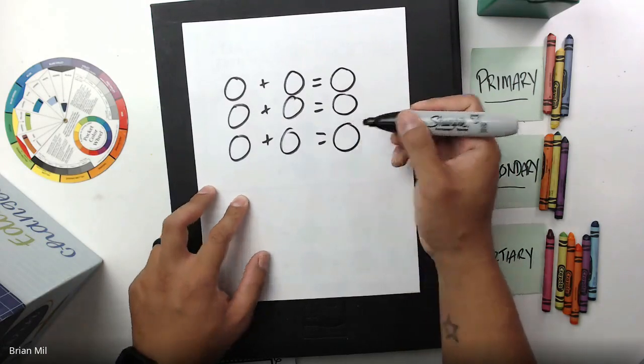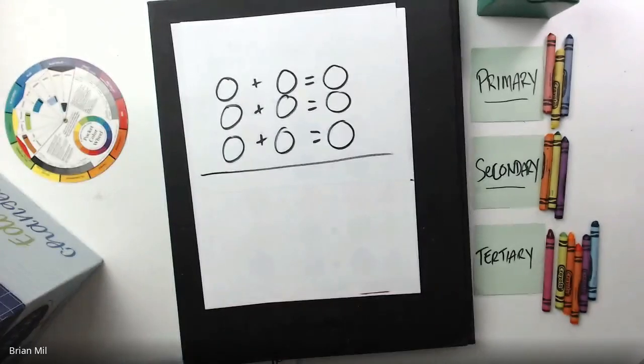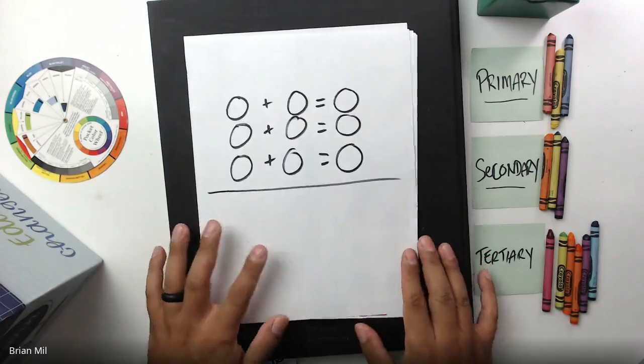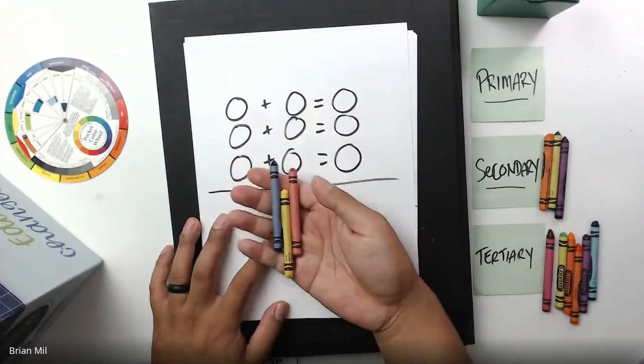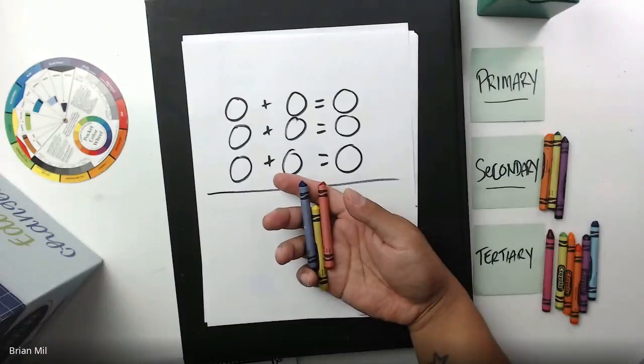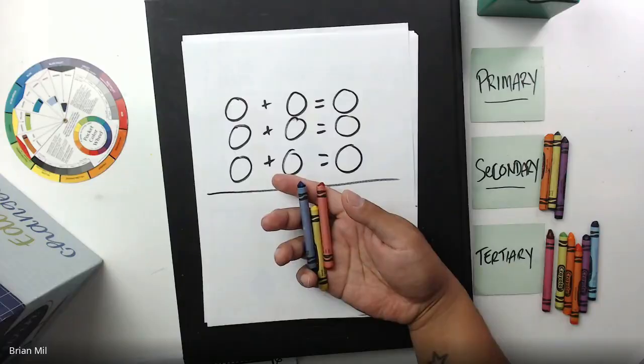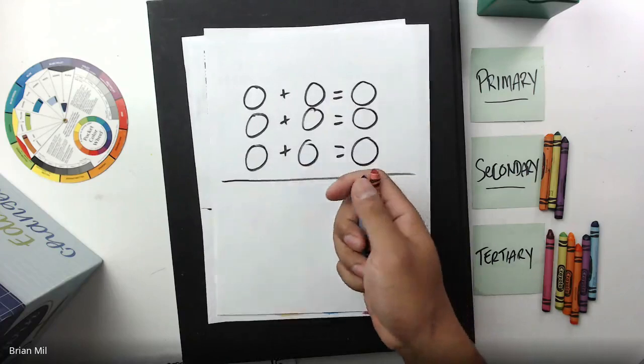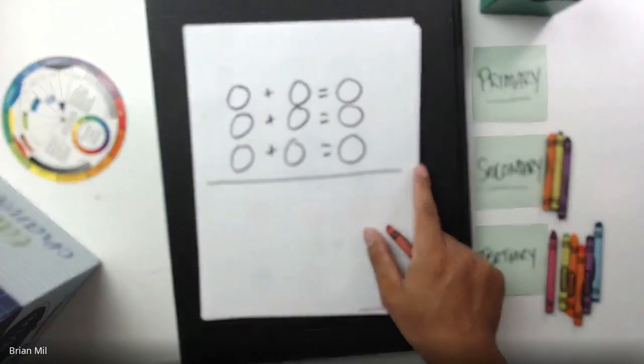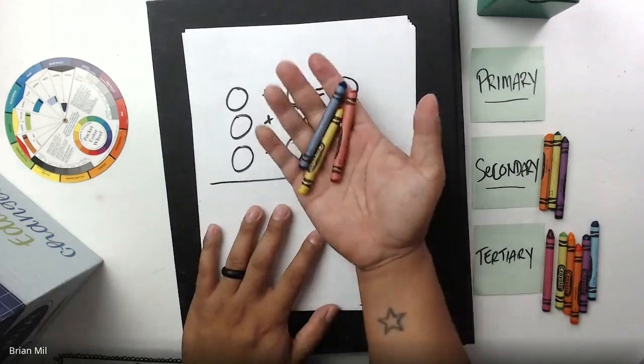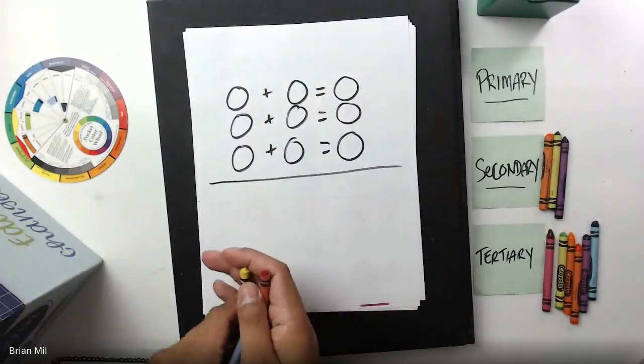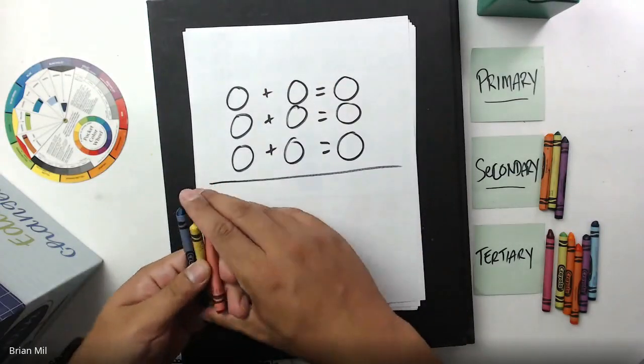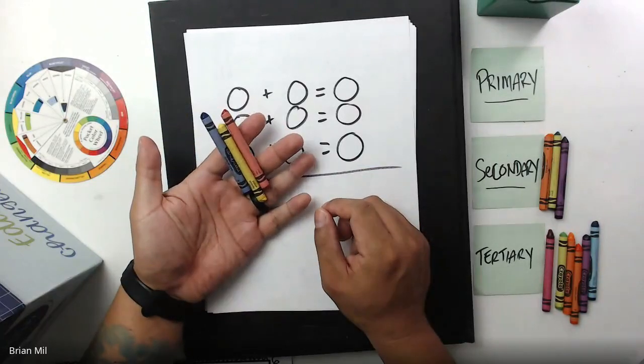What I'm going to do is try to figure out what these colors equal. Why don't we start off with the first one. These were all primary colors mixed together. The primary colors are red, blue, and yellow, and when you add them together they equal secondary colors.